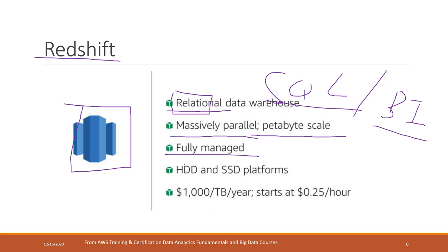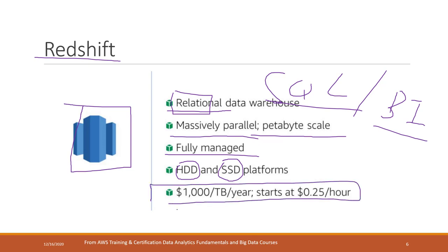You can choose different hardware platforms. If you want faster query performance, you can choose SSD, which is more expensive. Or you can choose HDD, which is a little bit cheaper. Note that the prices referenced are from around 2018, so they may not be accurate now.